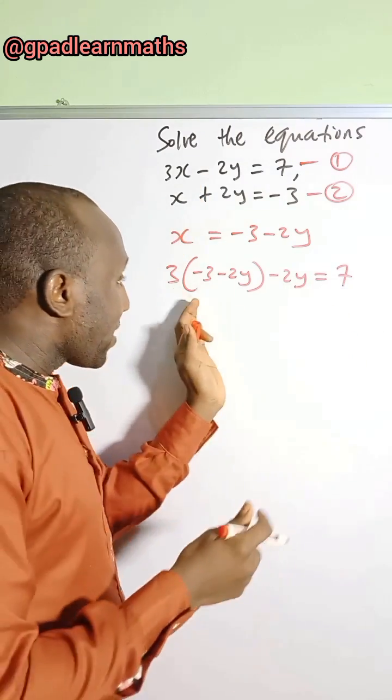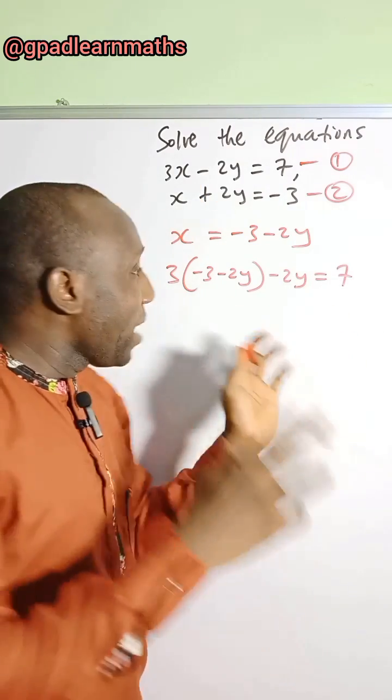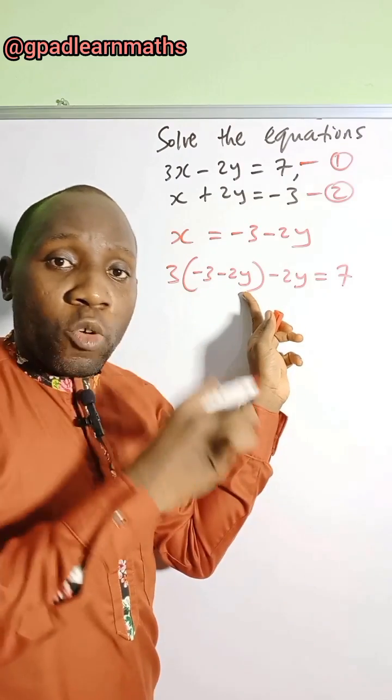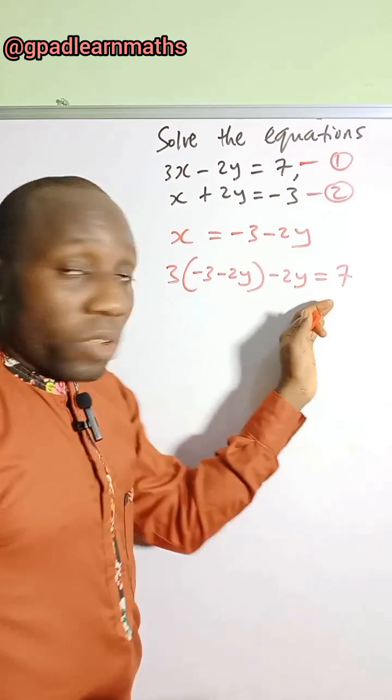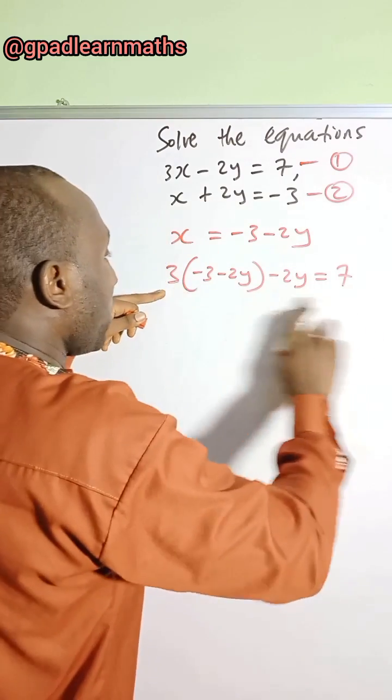If you notice, you will realize that the x is no more. So we only have y as the unknown here. And it will be very easy to solve for the value of y. So let's simplify this.